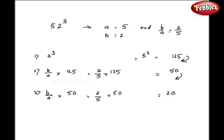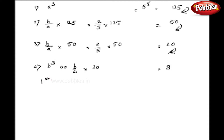As a fourth step, I will do b upon a into the previous answer, that is 20. Both the answers will be the same — here I get 8. Our first part is over. Now in the second part, as a first row, I will just write down the answers of the previous steps: 125, 50, 20, and 8.